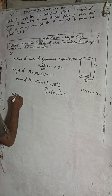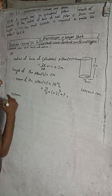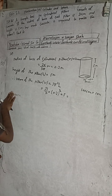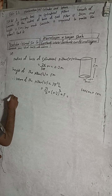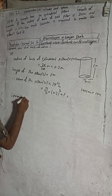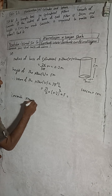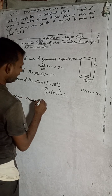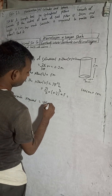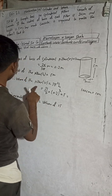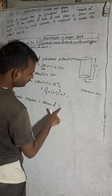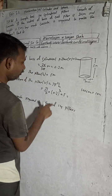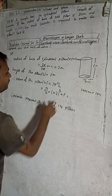So the concrete required equals the volume of 14 pillars. There are 14 pillars, so the total volume equals the volume of one pillar multiplied by 14. That gives us the required amount in metres cubed.